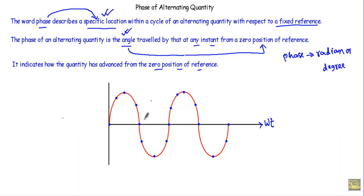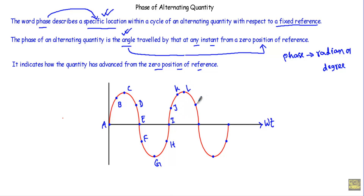Now, let's say I have this alternating quantity. I will locate the points A, B, C, D, E, F, G, and so on in this alternating waveform.